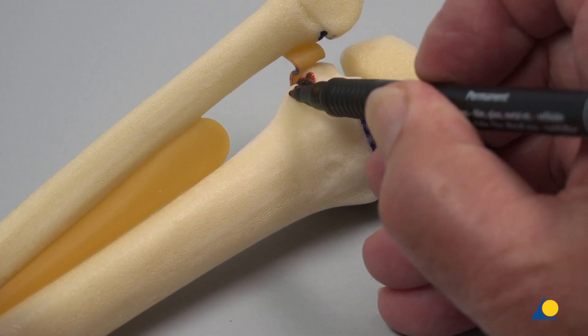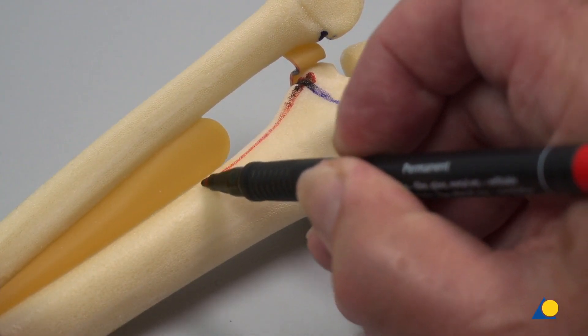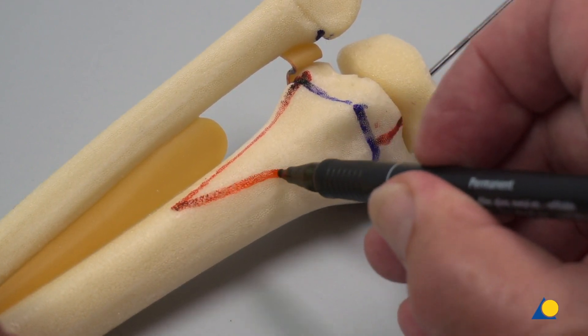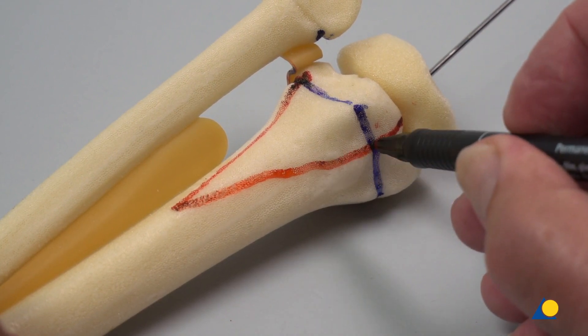On the posterior side of the tibia, the 3-4 cm long triangular metaphysial fragment, which represents the Salter-Harris type 2 fracture, is marked.